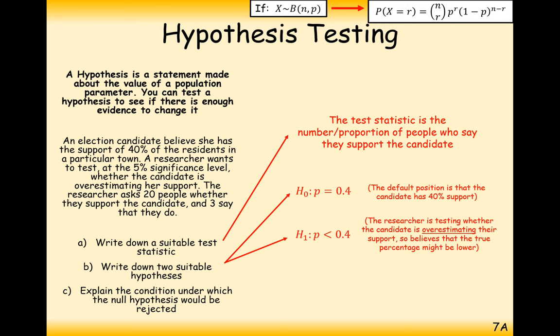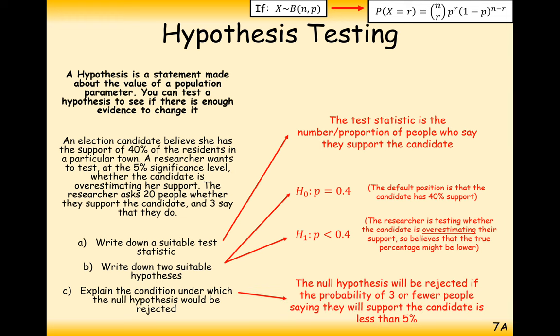Part C is explain the condition under which the null hypothesis will be rejected. Now this brings in the 5% significance level. So the null hypothesis will be rejected if the probability of 3 or fewer people saying that they support the candidate is less than 5%.